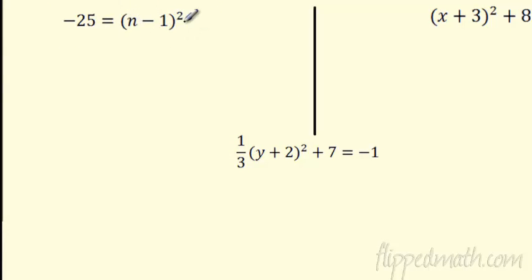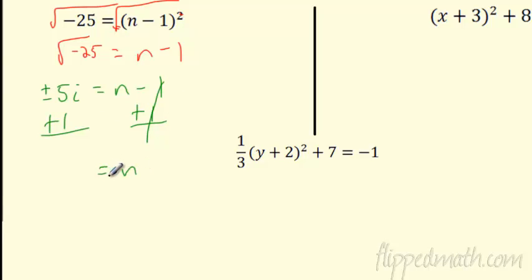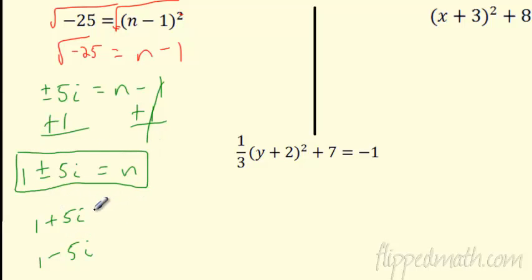When you're down to nothing but the perfect square, you square root both sides. Right off the bat: the square root of negative 25 — this cancels the square, leaving n minus 1. The square root of negative 25 is plus or minus 5i. That i gives us the negative, and 5 times 5 is 25. So it's plus or minus for n minus 1. I've got to add 1 to both sides: n equals 1 plus or minus 5i. Those are my two solutions.